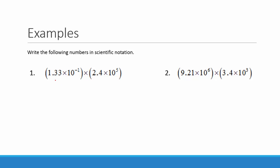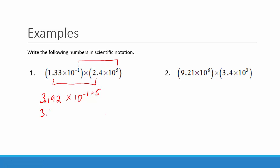Let's look at our first example. We will multiply 1.33 times 2.4, which gives us 3.192. Then we're going to add our exponents on the power of 10 — negative 1 plus 5 — because we're multiplying like bases. So we get 3.192 times 10 to the 4th.